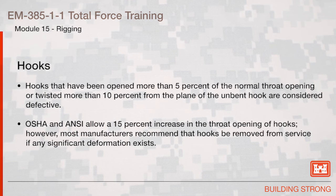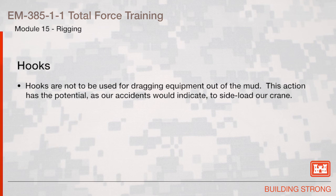Hooks. Hooks that have been opened more than 5% of the normal throat opening or twisted more than 10% from the plane of the unbent hook are considered defective. OSHA and ANSI allow a 15% increase in throat opening of hooks; however, most manufacturers recommend that hooks be removed from service if any significant deformation exists. Hooks are not to be used for dragging equipment out of the mud, as this action has the potential to sideload the crane.